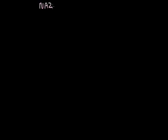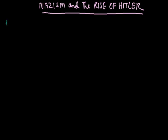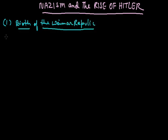Hello friends, let us start the third part of the video on Nazism and the rise of Hitler. We already covered the first part of the chapter which was the Birth of the Weimar Republic. In this part, let us start the second part of the chapter in our third module of the video.